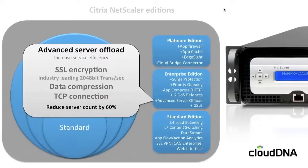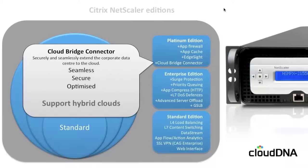Advanced server offload — there's loads of information about this on Citrix.com and on our own website, clouddna.co. By looking at ways of reducing the back-end server workload, Citrix has been very good at this because the NetScaler product was born of the dot-com age and they understand the problems of delivering content to users. By default, if we can remove resource-intensive application requirements — things like SSL encryption, TCP connection management, and data compression — then we can reduce the server count by around 60% while still delivering the same amount of content out to users. This is clearly a massive benefit for efficiency.